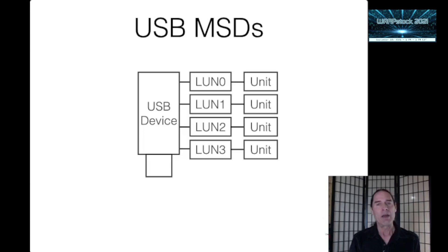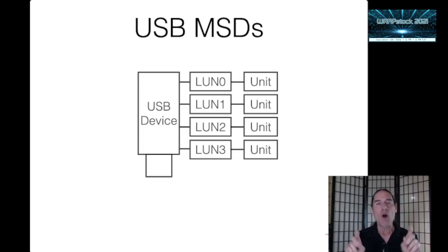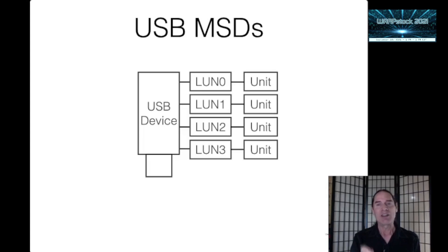The USB MSD driver gets around the hot-plug limitation by pre-attaching a bunch of fixed disk units at initialization time. The number of pre-attached disk units is defined by the REMOVABLE switch on the USB MSD command line in your config.sys. This is also why you see exactly this many so-called dummy USB devices in LVM, DFC, and other places — these are the placeholders where USB devices get attached later. When you plug in your USB MSD, the driver attaches each logical unit to a kernel disk unit.